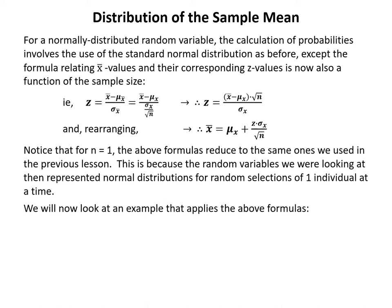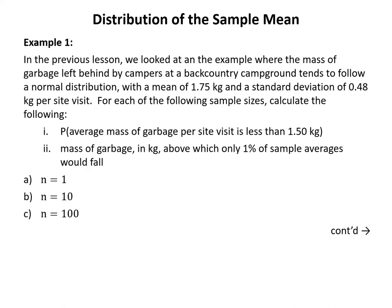In example 1, we return to the garbage mass example from the previous lesson, where garbage follows a normal distribution with mean 1.75 kg and standard deviation 0.48 kg per site visit. For each of three sample sizes — n equals 1, n equals 10, and n equals 100 — we calculate: (1) the probability that the average mass of garbage per site visit is less than 1.50 kg, and (2) the mass above which only 1% of sample averages would fall.